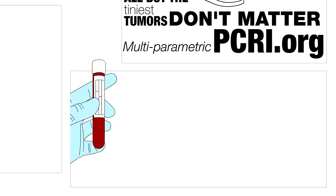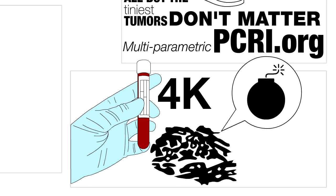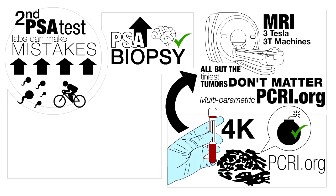The second option is a new blood test called the 4K test that can accurately estimate whether you have an aggressive form of the cancer. You can read about the test further at PCRI.org. If the test indicates that you may have an aggressive form of the cancer, then you want to move to the MRI.